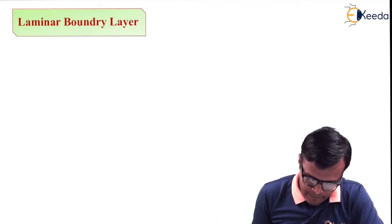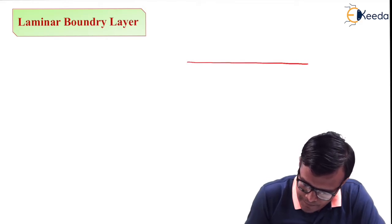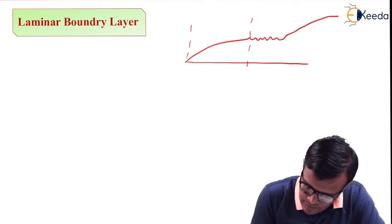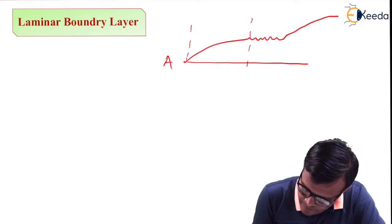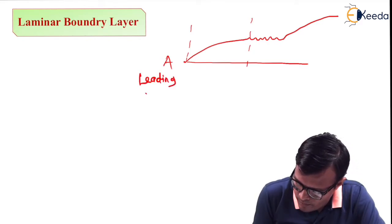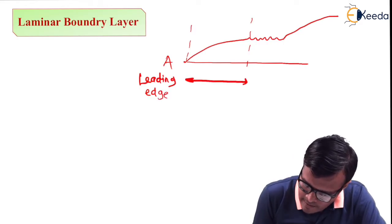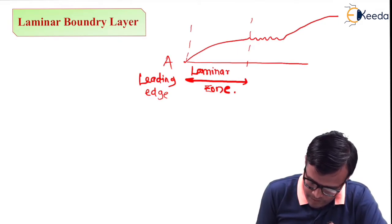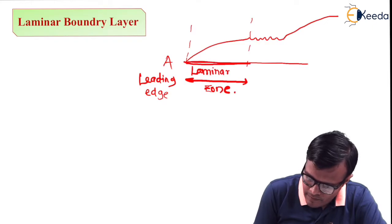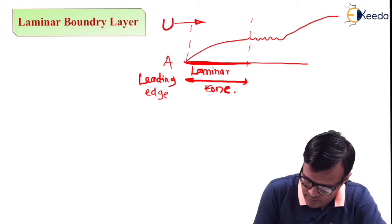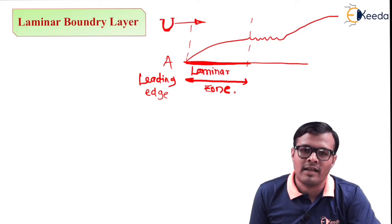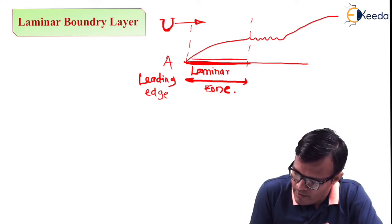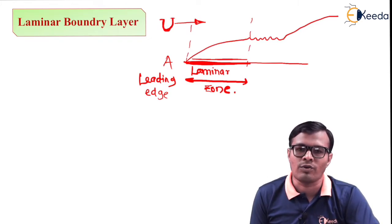Let's start with the laminar boundary layer. If this is a plate, this point A is called the leading edge, and this zone is called the laminar zone. When a smooth plate is placed parallel to the direction of flow U, due to the no-slip condition, the closest layer does not move because it is attracted by Van der Waals and adhesive forces.